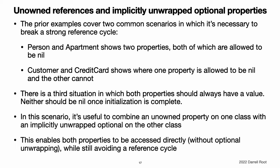Unowned references and implicitly unwrapped optional properties. The examples for weak and unowned references above cover two of the more common scenarios in which it is necessary to break a strong reference cycle. The Person and Apartment example shows a situation where two properties, both of which are allowed to be nil, have the potential to cause a strong reference cycle — best resolved with a weak reference. The Customer and CreditCard example shows a situation where one property that is allowed to be nil and another property that cannot be nil have the potential to cause a strong reference cycle — best resolved with an unowned reference. However, there is a third scenario in which both properties should always have a value and neither property should ever be nil once initialization is complete. In this scenario, it is useful to combine an unowned property on one class with an implicitly unwrapped optional property on the other class. This enables both properties to be accessed directly without optional unwrapping once initialization is complete, while still avoiding a reference cycle.